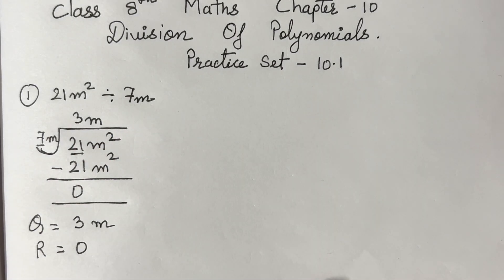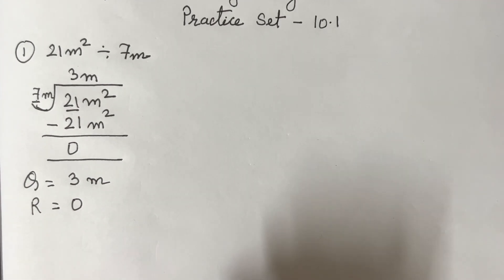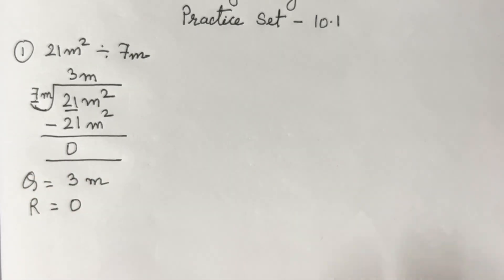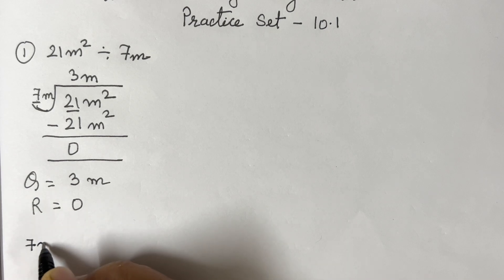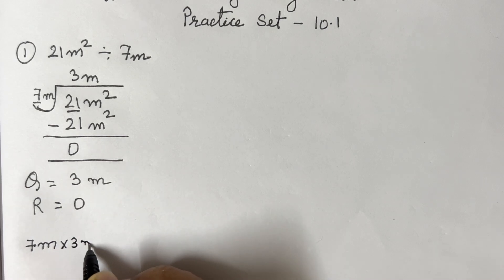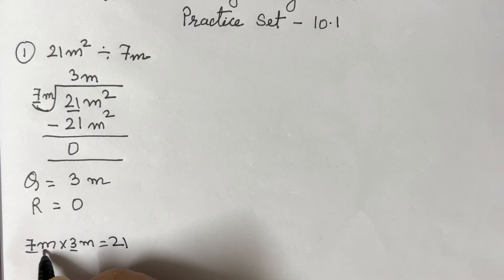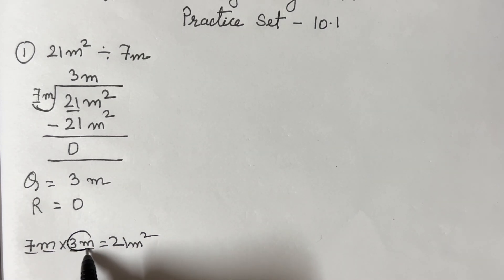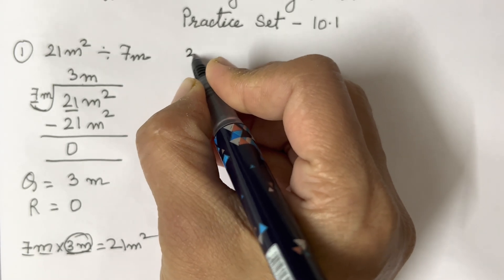If you are not understanding the division method, you can multiply separately. For example, 7m × 3m: 7 threes are 21, m × m is m². So you get 21m². When you practice these sums it will become very easy.